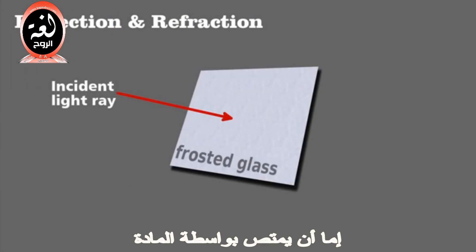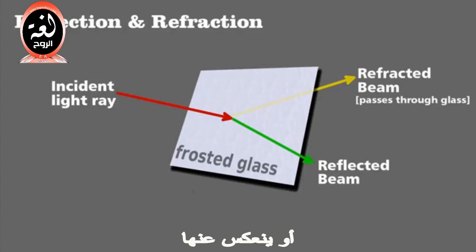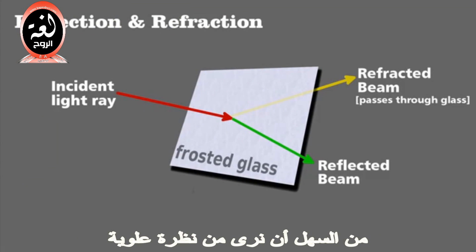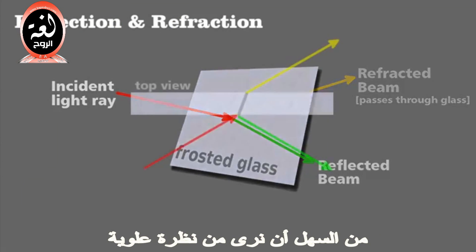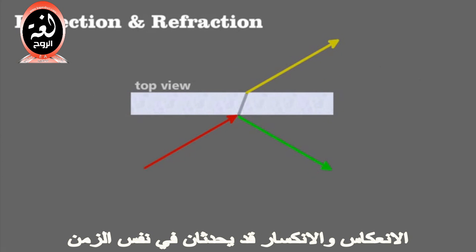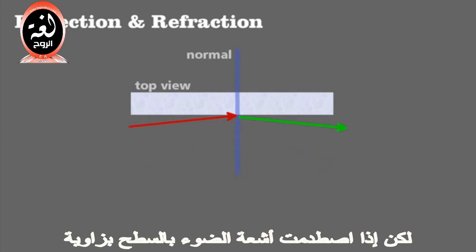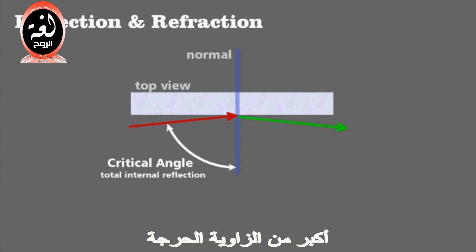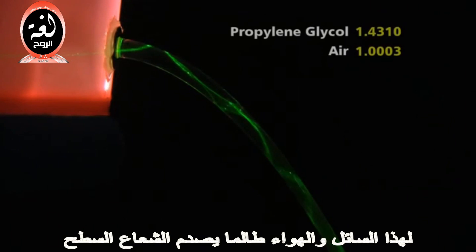Recall that any time light strikes a surface, it can either be absorbed by the material, reflected from it, or pass into and through it — the latter we call refraction. It's easier to see from a top view. Reflection and refraction can happen at the same time, but if a light ray hits the surface at an angle greater than the critical angle, it will be completely reflected and not refracted.